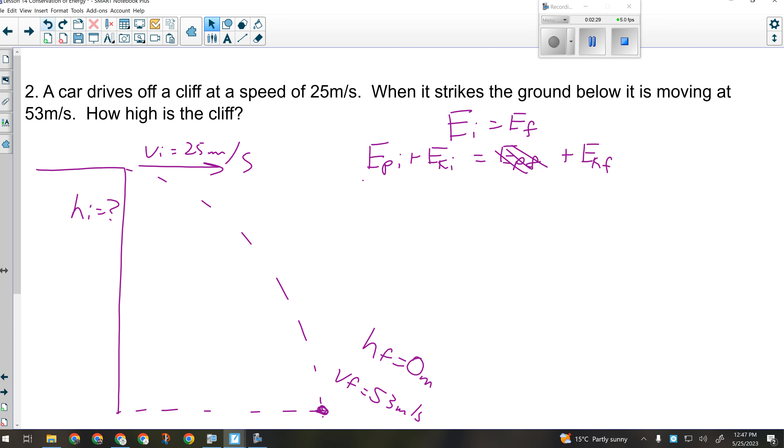All right, so I'm trying to find out how high the cliff is, which would be part of initial potential energy. I want to get that by itself. What should I move? The initial kinetic. How would I move the initial kinetic over? Subtract it. So we're going to have initial potential equals final kinetic minus initial kinetic. Are we still following the same pattern? But it looks a little bit different because this time we're missing one of the forms of energy.